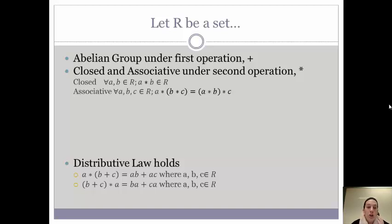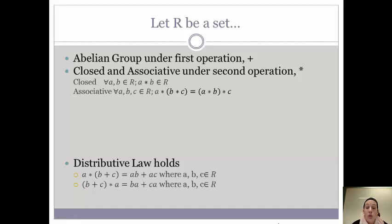These three bullet points — one, two, three — those are your requirements for being a ring. So if a set has those three properties, you are a ring.